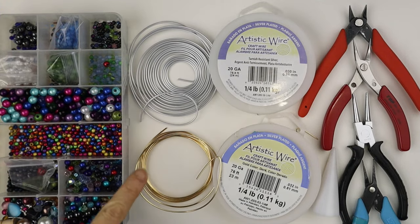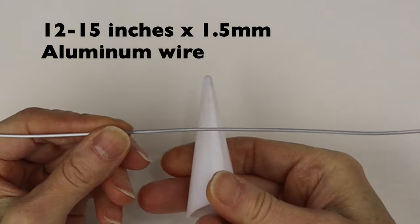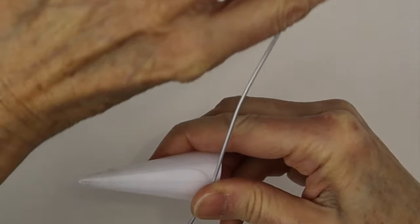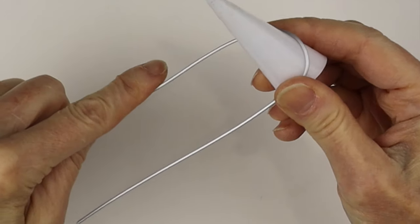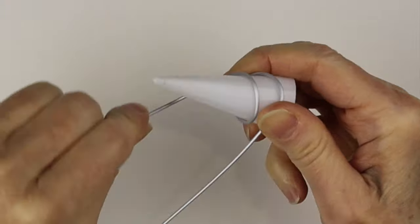Today we're making some classic flattened bookmarks with beads. What you're going to need for this project is 1.5 millimeter or 16 gauge wire, your tools, and a variety of beads.